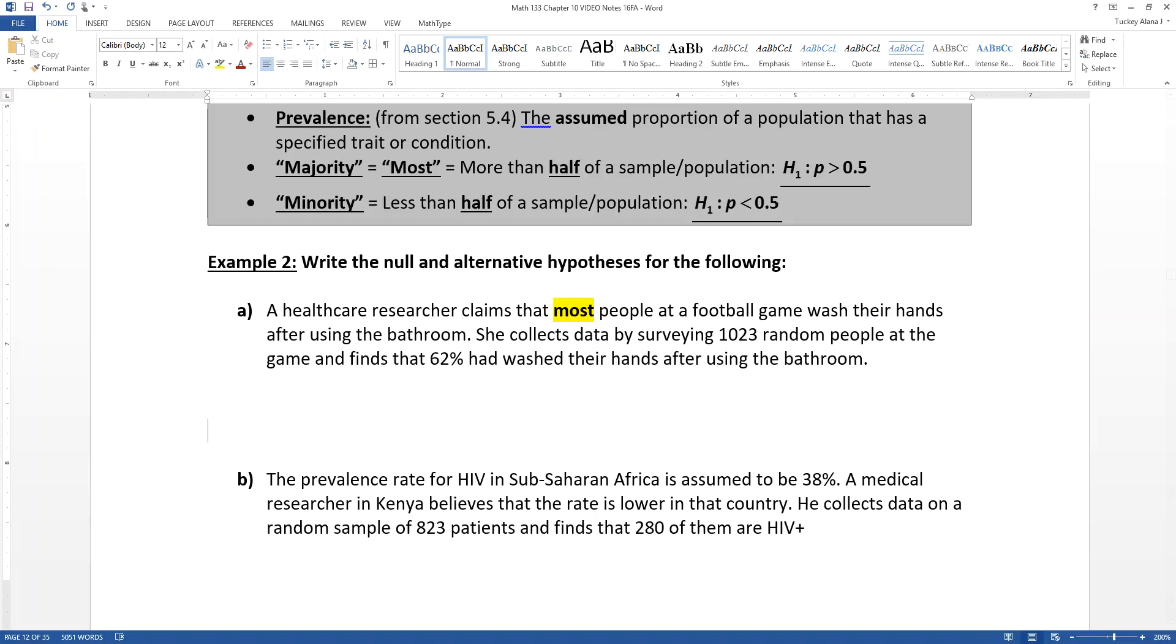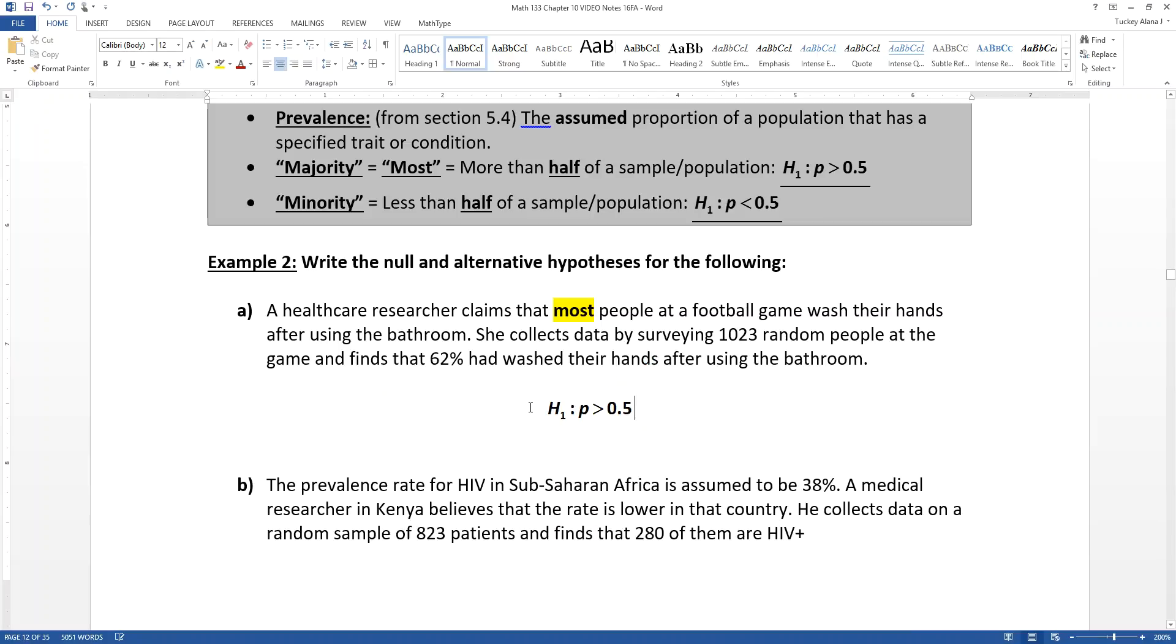Of course, any healthcare professional will tell you that it should be a hundred percent. But that most business is giving you your alternative hypothesis. So I know that H1 must be equal to P is greater than 0.5.